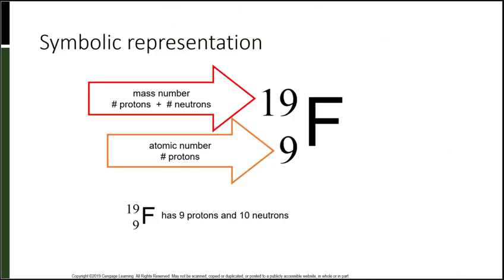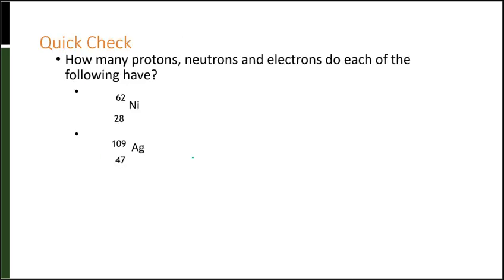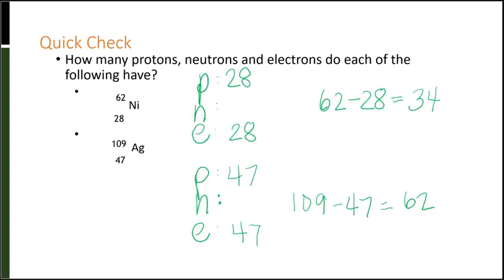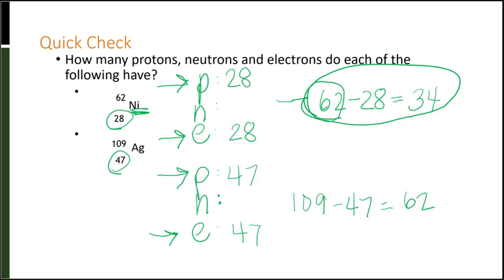Here's a quick check: how many protons, neutrons, and electrons do both nickel isotopes have? Neither one is an ion, so protons and electrons for each are the same. Look up the atomic number for nickel — that bottom number is the atomic number, which equals protons and electrons since they're neutral. To find neutrons, use mass number minus protons: that gives 34 for the first and 62 for the second.